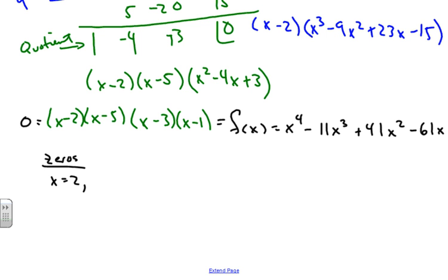We can sketch this graph now by plotting our zeros. We got a zero at 1, zero at 2, zero at 3, and a zero at 5. We know that this is a fourth degree, so my end behaviors are going to rise to the right and rise to the left because the leading coefficient is positive as well.